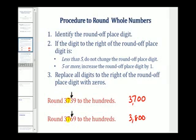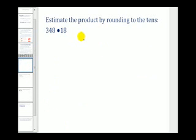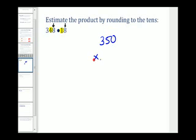Let's take a look at our examples. We want to estimate this product by rounding to the nearest tens. The four is in the tens place in the first number and the one is in the tens place in the second. The digit to the right in both cases is eight, which tells us to round up. So we'll round 348 to 350 and round 18 to 20, and use this product to estimate the original.